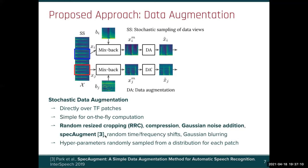In bold are those that we found beneficial. Every augmentation has one or more hyperparameters, and we randomly sample them from a distribution for every patch.